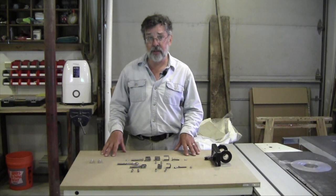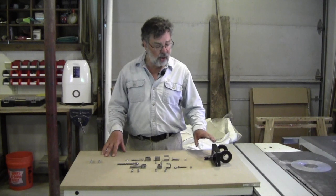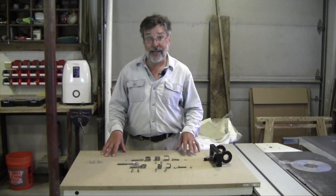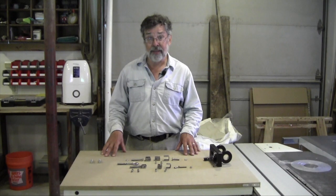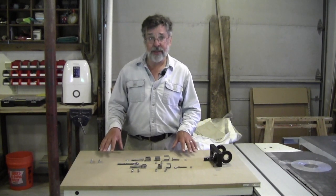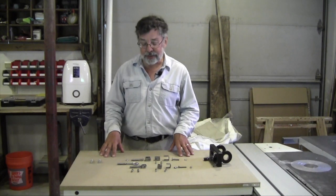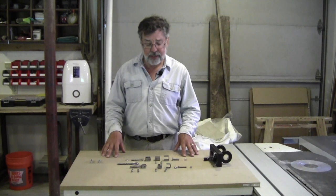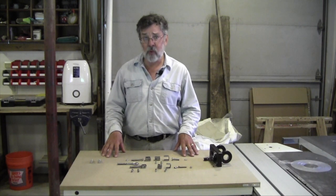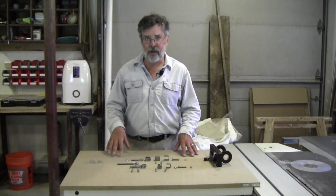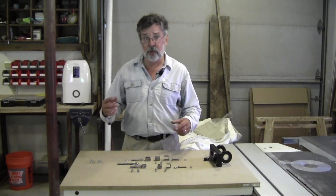But one of the unintended consequences of that change is that when furling and unfurling now there's more force being put on the gooseneck hardware. Basically either process tends to push or pull the boom towards the mast, so you get compression forces there.